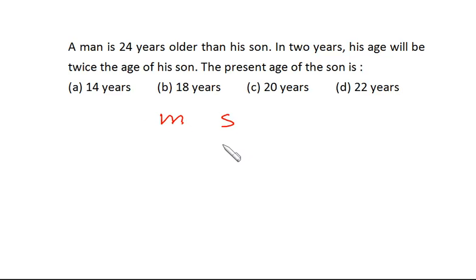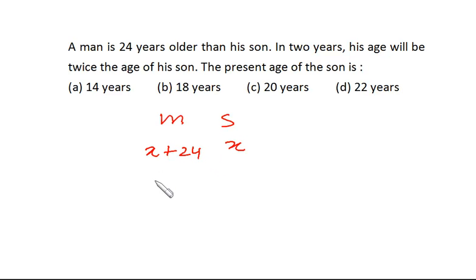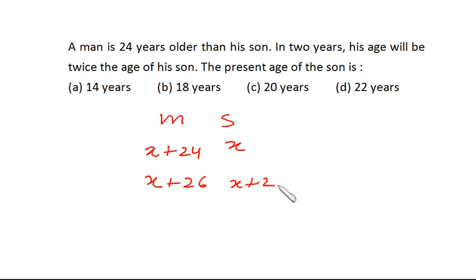If the son's present age is x, then the man's present age is x plus 24. In two years, the man's age will be x plus 24 plus 2, that is x plus 26, and the son's age will be x plus 2.